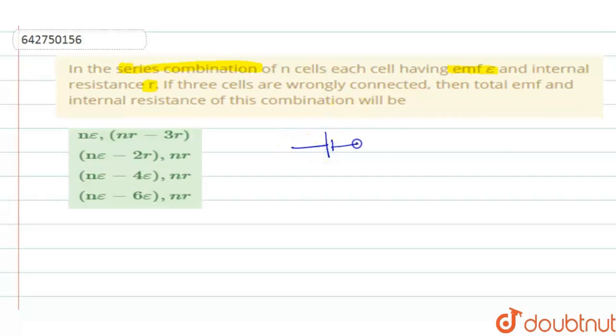So if you have all the cells connected like this, suddenly somewhere in between like this, it is connected. So some three cells are connected wrongly like this.